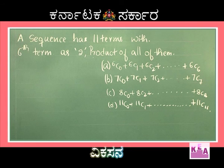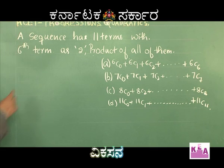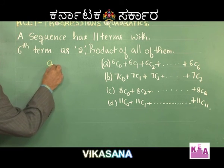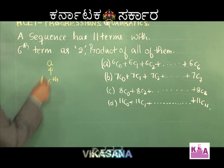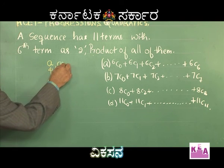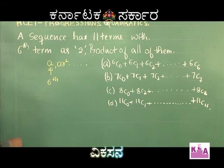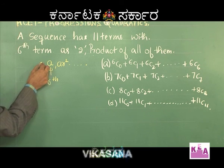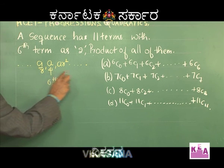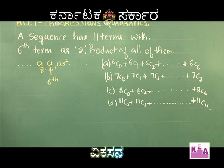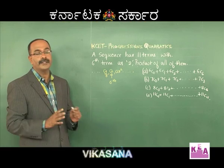For example, if the number of terms given is 11, the middle (6th) term is written as 'a', the 7th term as ar, the 8th as ar², and the 5th as a/r, and so on. This is how you write the terms when 11 terms are given. That is concept number one.